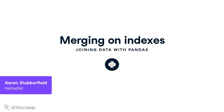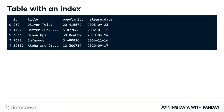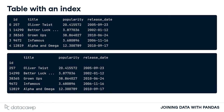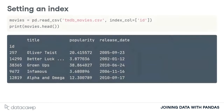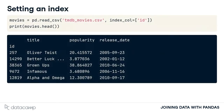Often, DataFrame indexes are given a unique ID that we can use when merging two tables together. Here, we show the movies table that was introduced earlier in this chapter. The index is the default 0, 1, 2, 3, etc. auto increment. In the second version, the ID column is the index for the table. There are different methods to set the index of a table, but if our data starts off in a CSV file, we can use the index column argument of the read CSV method.